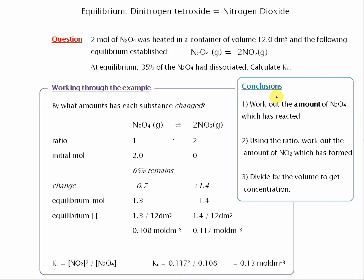So just to conclude and review what we've done. First of all, we worked out the amount of N2O4 which had reacted. So we worked out the amount here that remained, which was 1.3. So therefore, the 0.7 was the amount which reacted.